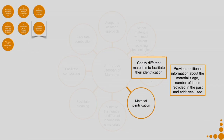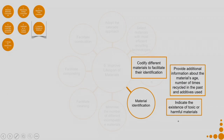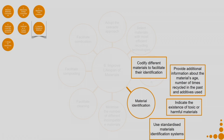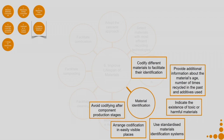Provide additional information about the materials — age, number of times recycled, and additives used. These help in material identification and identifying which recycling process it can go through and what secondary life it can have. Indicate the existence of toxic or harmful materials. Use standardized material identification systems. Arrange codification in easily visible places. Avoid codifying after component production stages — try to build in the codifying system at the production stage itself.